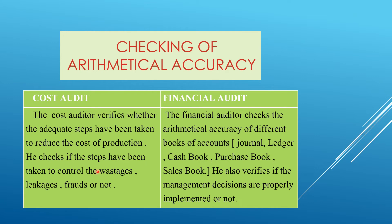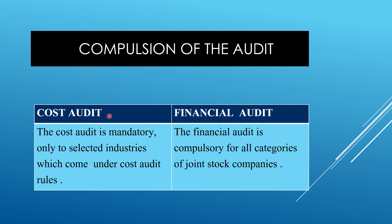The financial auditor is not related to the production process. He checks the arithmetical accuracy of different books of account — journal, ledger, cash book, purchase book, sales book — and verifies if management decisions are properly implemented. Regarding compulsion, cost audit is mandatory but only for selected industries under the cost audit rules, not every organization. Financial audit is compulsory for all categories of joint stock companies.